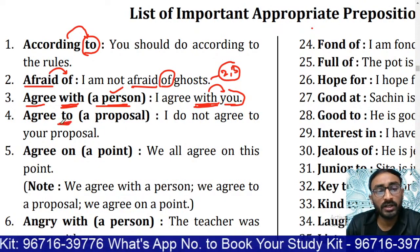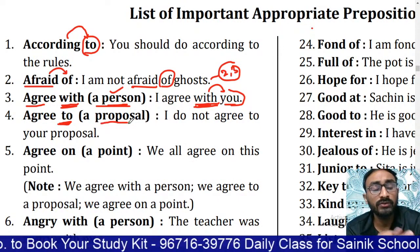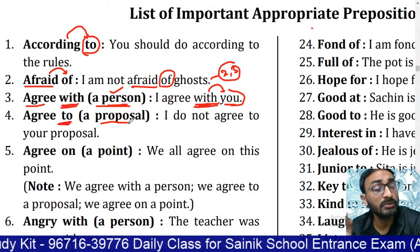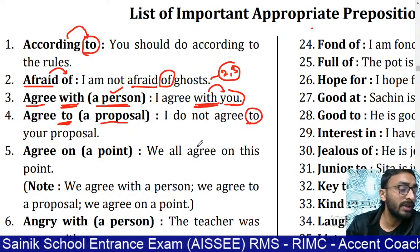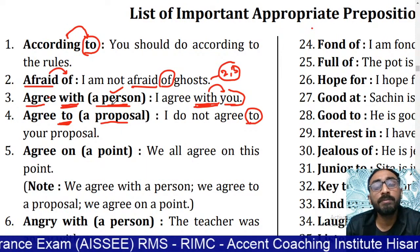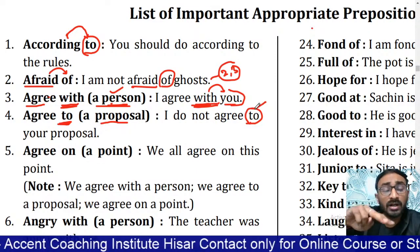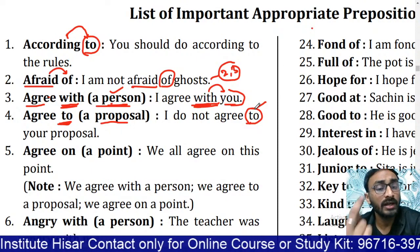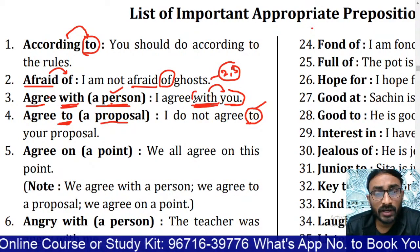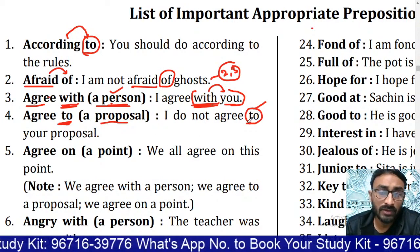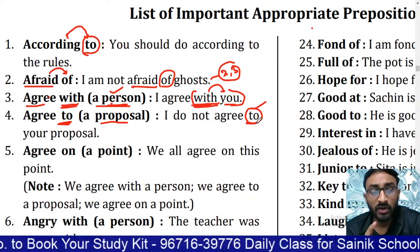'Agree to' is used when a proposal, demand, or agreement is written. Once again: 'according to,' 'afraid of,' 'agree with' the person. If a person is written, use 'with'; if anything except a person is written, use 'agree to.' Also, 'agree on' is used for a point. Agree can take three different prepositions: 'with,' 'to,' and 'on.'